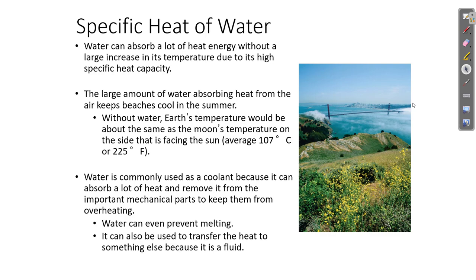The heat capacity of water is very high — water can absorb a lot of heat before its temperature changes. This is one reason why coastal regions have regulated temperatures, not getting very hot in summer or very cold in winter. In summer, extra heat is absorbed and stored by the water instead of heating the air. In winter, that stored heat releases from the water and warms the air. The water acts as a reservoir for heat.